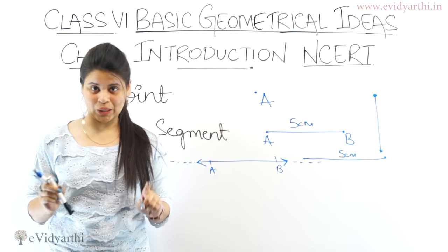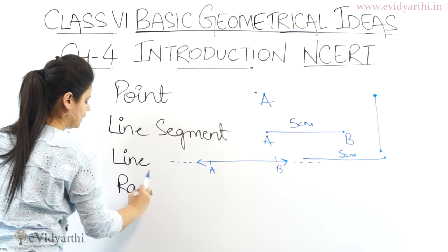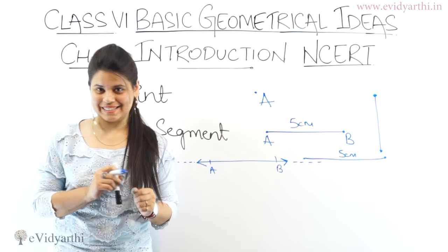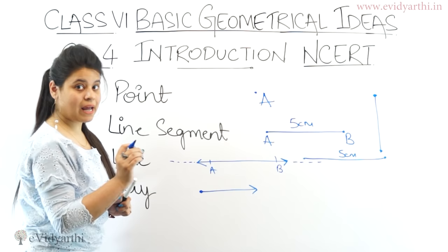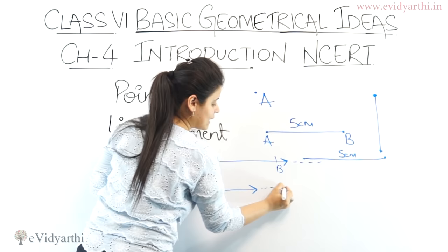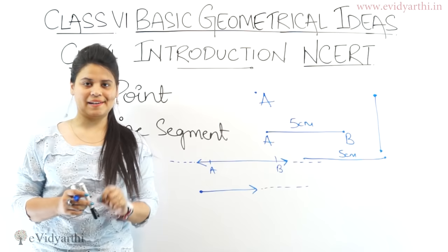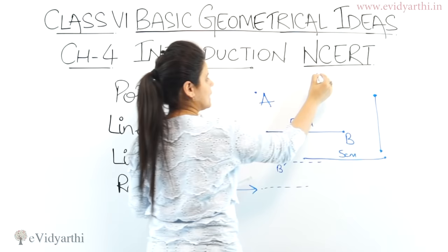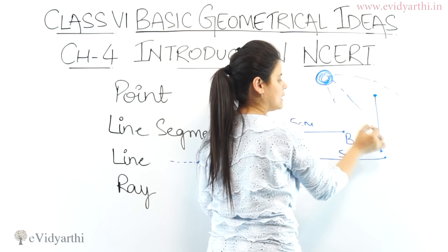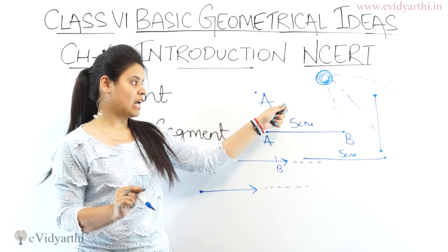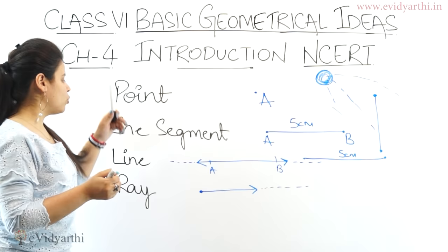Now the next we have is a ray. What is a ray? A ray is a mixture of both. A ray has one fixed end point — its origin is fixed. This end point is fixed and it cannot extend on that side, but it can extend on the other side. A very basic example is sun rays. The sun is the fixed point, and the ray can go as far as it wants. So remember: ray means one end point is fixed, and it can extend infinitely on one side.